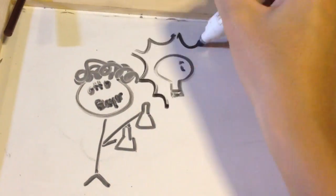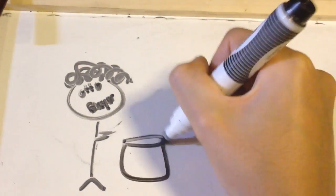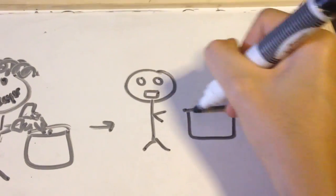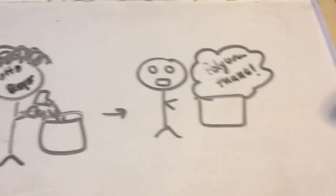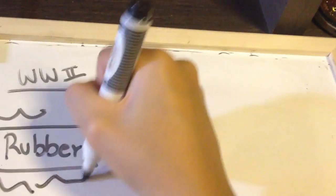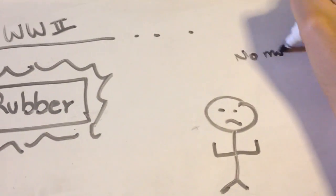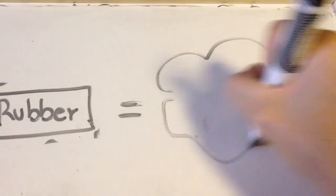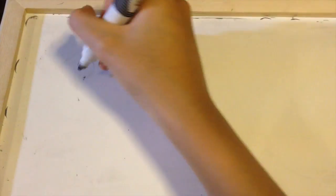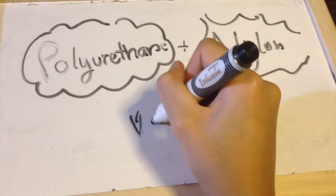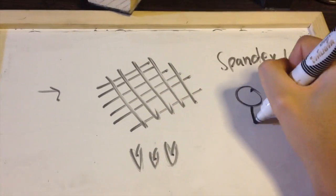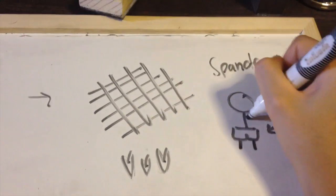The first ever polyurethane polymer was developed by a German chemist named Otto Bayer. During World War II, rubber was extremely expensive, and spandex became a great alternative for it. When scientists later discovered that polyurethanes could be made into threads, they were then combined with nylon to produce lightweight and stretchy garments, or what we call now spandex.